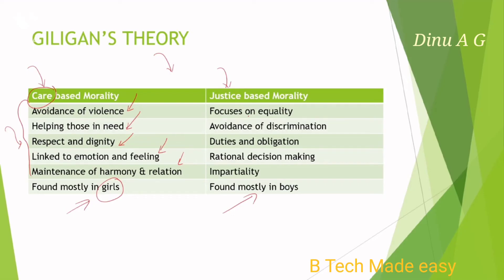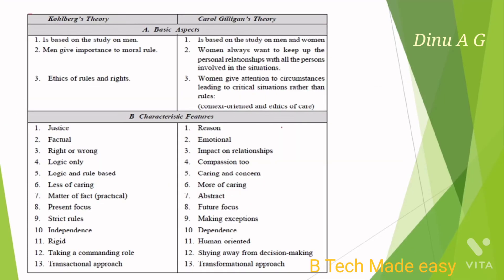In the case of boys, they focus on equality, equality importance, avoidance of discrimination, duties and obligations, rational thinking, decision-making, and impartial thinking. According to Gilligan, these are the moral qualities that are basically found in boys.